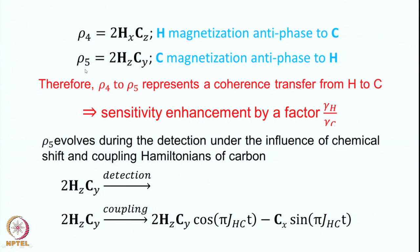Now when I apply a 90y pulse on proton and a 90x pulse on carbon, we get ρ5. The 90y pulse on proton converts Hx to Hz, and the 90x pulse on the carbon channel converts Cz to Cy. So 2HxCz becomes 2HzCy. This is carbon magnetization antiphase to proton, and this represents a coherence transfer from proton to carbon — all the polarization present on the proton has now become carbon magnetization.